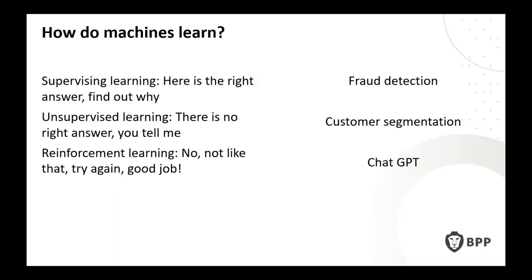We teach computers through machine learning in three ways. First, supervised learning — here are all the right answers, figure out why. Second, unsupervised learning — here's a bunch of information, figure it out, tell me where it splits. Third, reinforcement learning — we tell it when it's doing right and give it a score. Fraud detection, customer segmentation, and ChatGPT are examples of all these different approaches. We feed in big historic datasets, the model works out the rules, and then predicts or segments accordingly.